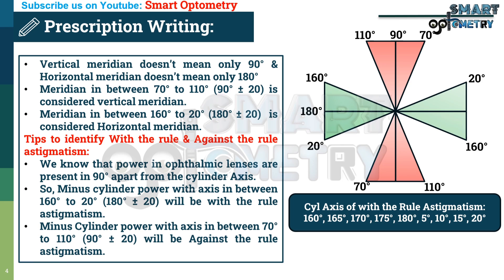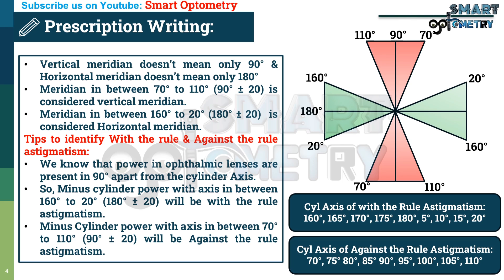Minus cylinder power with axis between 70 and 110 degrees — that is, 90 degrees plus or minus 20 — will be against the rule astigmatism. So minus cylinder at 70, 75, 80, 85, 90, 95, 100, 105, or 110 degrees will be examples of against the rule astigmatism.